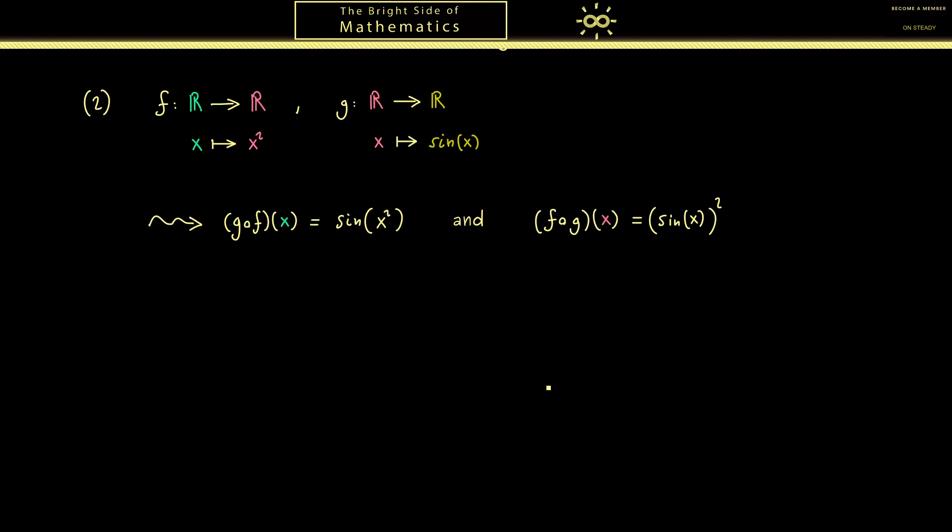Ok now with the knowledge of composition we can finally explain why we have the term inverse map. However first I want to talk about a very particular map that we can define for any set A. It's called the identity map and we write id and put the set A in the index.